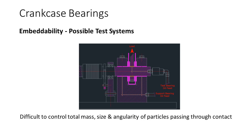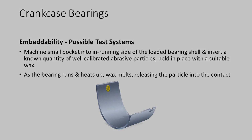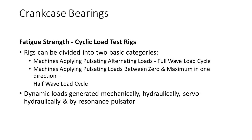The key challenge is the injection of particles in a controlled fashion into the test bearing. As with any tests involving abrasive particles, there are uncertainties associated with how long the particles remain in the contact and avoid comminution. Ideally, one would like to control the total mass, size and angularity of the particles passing through the contact. One way of achieving this is to machine a small pocket in the in-running side of the loaded bearing shell and insert a known quantity of well-calibrated abrasive particles held in place with a suitable wax. As the bearing runs and heats up, the wax melts, releasing the particles into the contact.